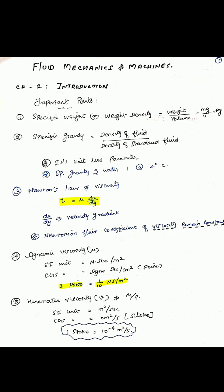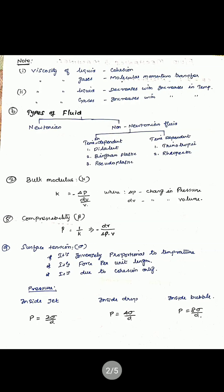Kinematic viscosity in CGS is called Stoke. One Stoke equals 10 to the power of minus 4 meter square per second. Some important points related to viscosity: viscosity of liquid is due to cohesion; viscosity of gas is due to molecular momentum transfer.